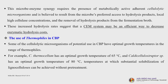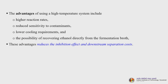Some cellulolytic microorganisms of potential use in CBP are thermophiles. For example, Clostridium thermocellum has an optimal growth temperature of 65°C, and Caldicellulosiruptor species has an optimal growth temperature of 80°C — temperatures at which substantial lignocellulose solubilization can be achieved without pretreatment. Advantages of using a high-temperature system include higher reaction rates, reduced sensitivity to contaminants, lower cooling requirements, and the possibility of recovering ethanol directly from the fermentation broth as vapour, also reducing inhibition effects and downstream separation costs.